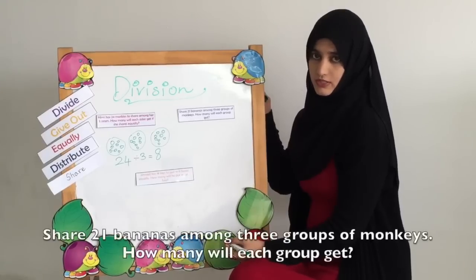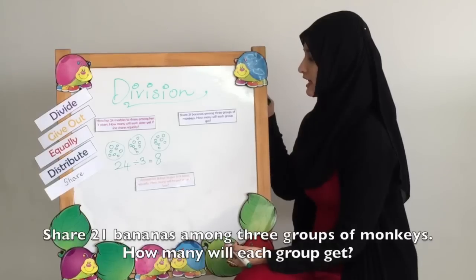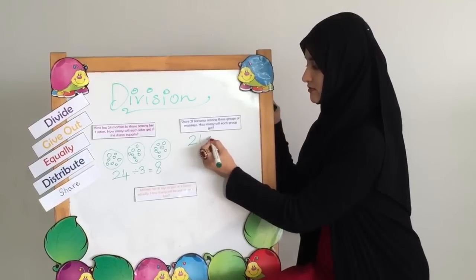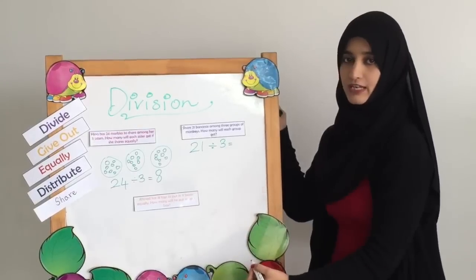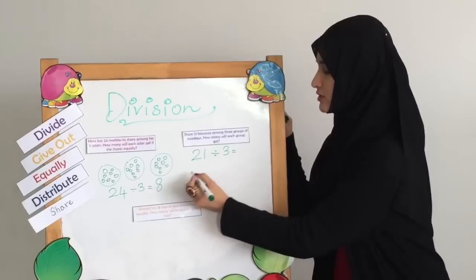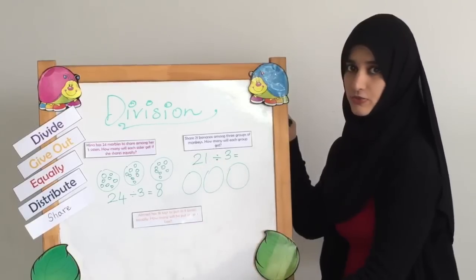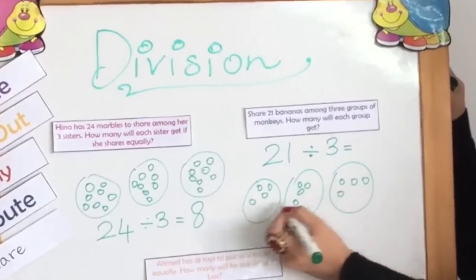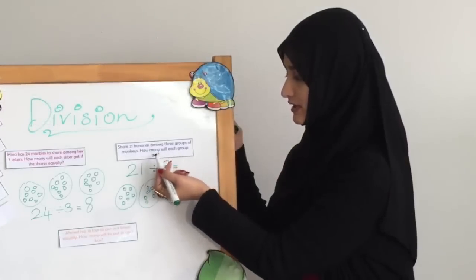The second question is, share 21 bananas among three groups of monkeys. How many will each group get? 21 bananas have to be divided among three groups of monkeys. And we need to find out how many bananas each group got. So again we are going to draw the three groups of monkeys. That's the first one, the second one and the third one. And we need to distribute 21. We need to find out how many each group will get.